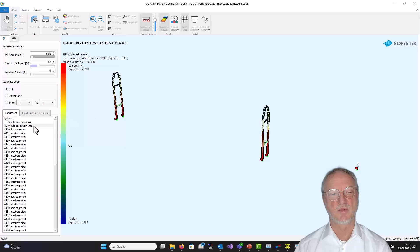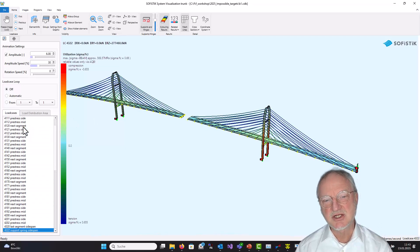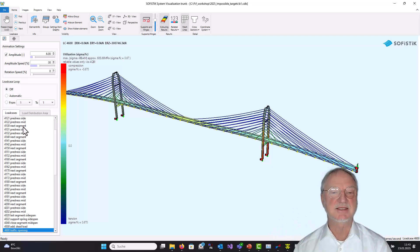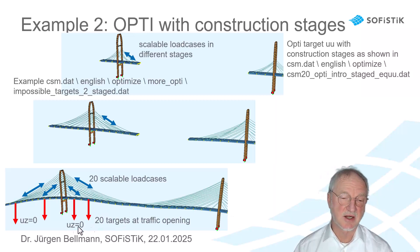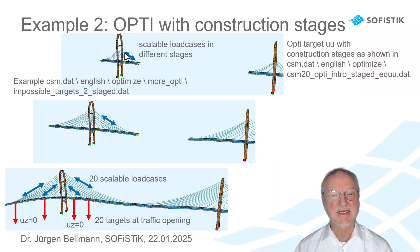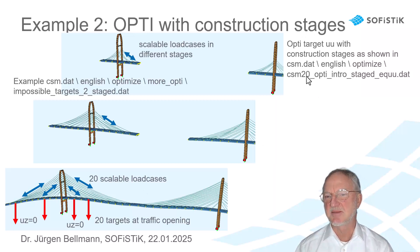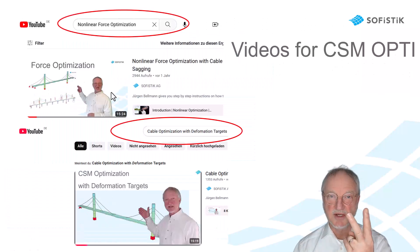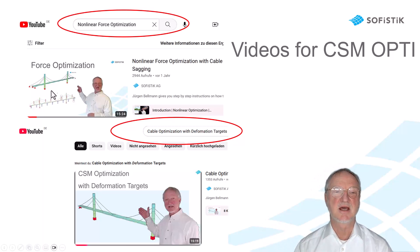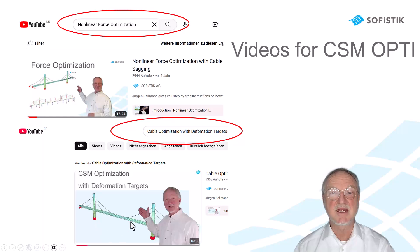Let's go to the second example. We have a bridge with construction stages and want to optimize the deflection at traffic opening. We have the targets UZ equals zero, 20 targets, and for this we have 20 scalable load cases. The load cases act in the construction stage and not on the final stage. There is an example CSM20 Opti-Intro Staged, also called Impossible Targets 2 Staged. There are two YouTube videos for these problems: the first is non-linear force optimization, and the second is cable optimization with deformation targets.